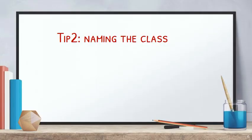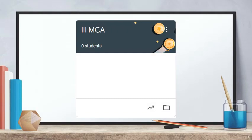Second tip: naming the class. How do you name the class? For example, if you have a math class and you have a batch called Third MCA, you will find it listed as Third MCA.